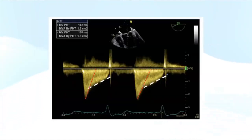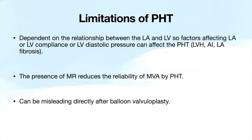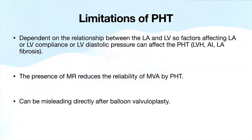When there is a biphasic mitral valve inflow—where pressure rapidly decreases initially and then tapers off—it's important to use the pressure half-time of the later phase of diastole to get the true pressure half-time. Limitations of pressure half-time include dependence on the relationship between the left atrium and left ventricle: factors affecting LA or LV compliance or LV diastolic pressure—such as LV hypertrophy, aortic insufficiency, or left atrial thrombosis—can all affect it. The presence of MR also reduces reliability, and pressure half-time can be misleading directly after a balloon valvuloplasty, where planimetry is preferred.